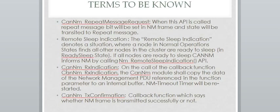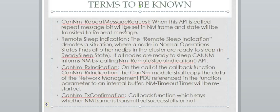Terms to be known: CAN-NM Repeat Message Request is an API — when this API is called, the 0th bit in the NM frame will indicate the Repeat Message Bit. So if this API is called, the Repeat Message Bit will be set. Remote Sleep Indication denotes the situation where your node is in Normal Operation and all other nodes in the cluster have gone to sleep state.